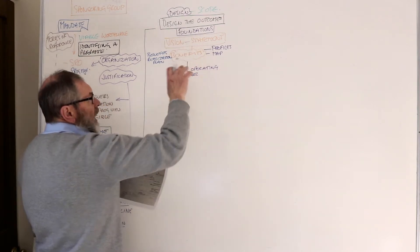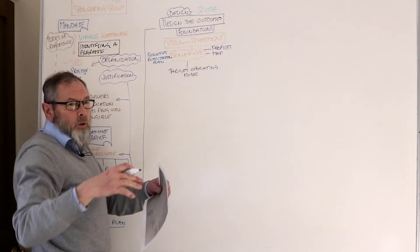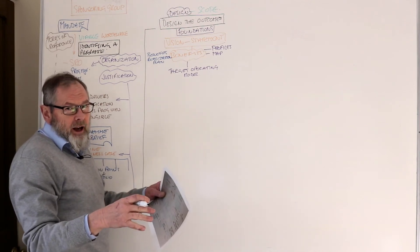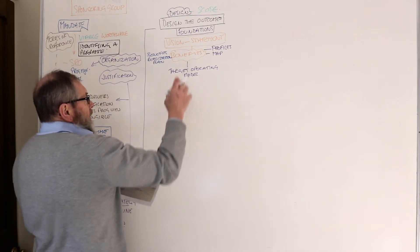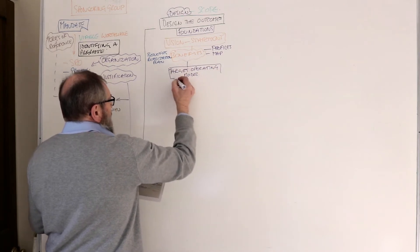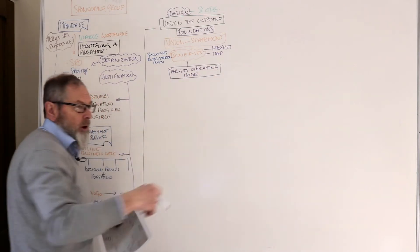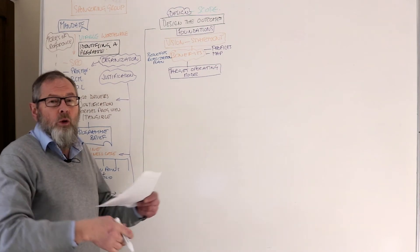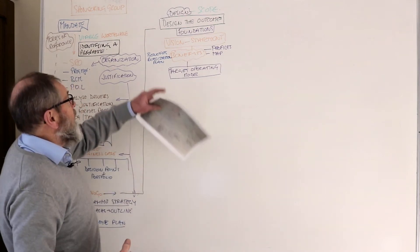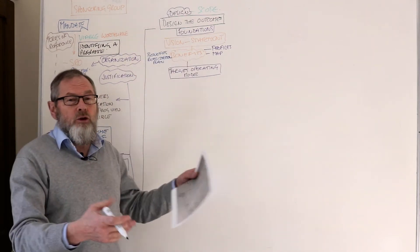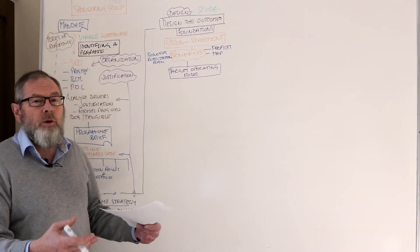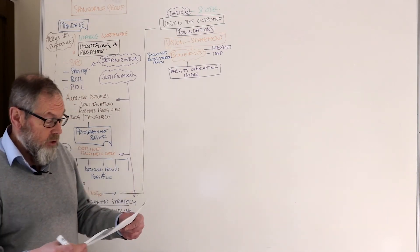The target operating model supports the vision. The vision is a high-level view — something easily communicated to get people on board — and the detail is going to be in the target operating model, which has those seven elements: process, technology, learning, culture, and so on. The vision is saying 'here we are in the future,' and the target operating model defines in more detail how that new vision will be working when you're there in the future.